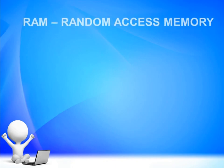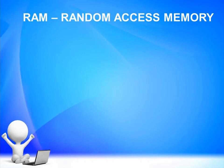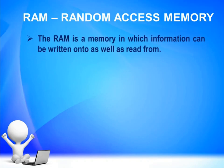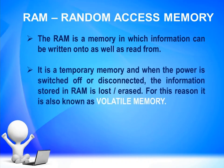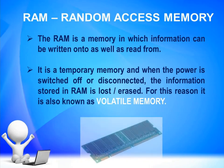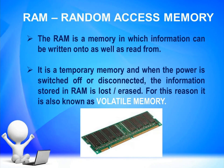Let us discuss RAM — random access memory. RAM is a memory in which information can be written onto as well as read from. It is a temporary memory, and when the power is switched off or disconnected, the information stored in RAM is lost or erased. For this reason, it is also known as volatile memory. Here is a picture of RAM. The computer uses this memory during current storage and processing of data, and also for the storage of the software currently needed to do a task.